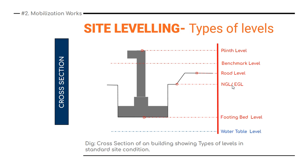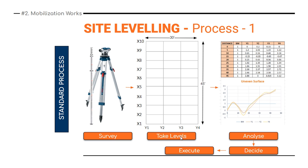After cutting the foundation, you can find the footing bed level. Below that is the water table level. In this ideal condition, the water table is a bit lower than the footing bed level. This is the typical cross-section of a building showing the various types of levels and standard site conditions.